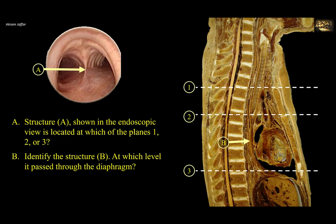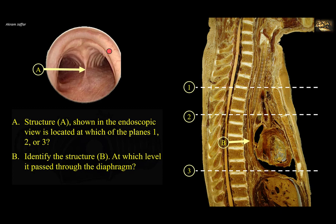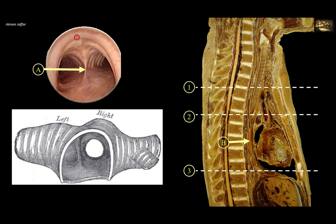Structure A shown in the endoscopic view is located at which of the planes 1, 2, or 3? This is an endoscopic view of the trachea. You can see the C-shaped costal cartilages in the wall that keep the wall open. Posteriorly the wall is flattened because it has the trachealis smooth muscle and is opposed to the esophagus. This level is at the bifurcation of the trachea — this region is called the carina, the projection located between the left and right main bronchi. Bifurcation of the trachea is located at the level of the sternal angle.